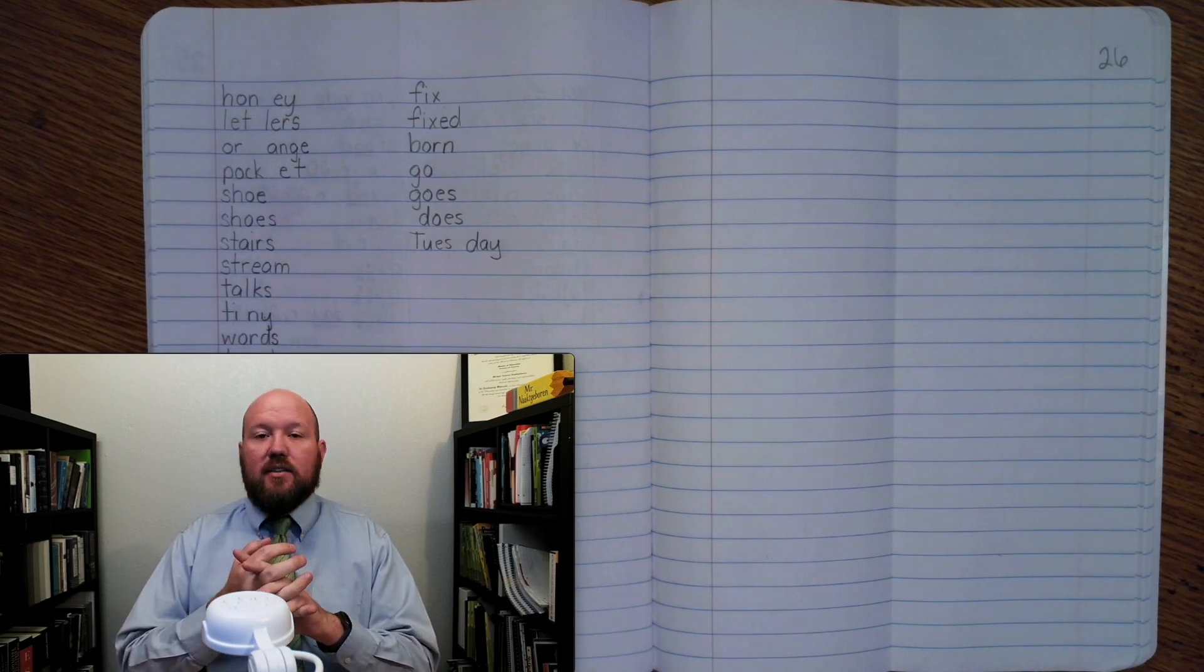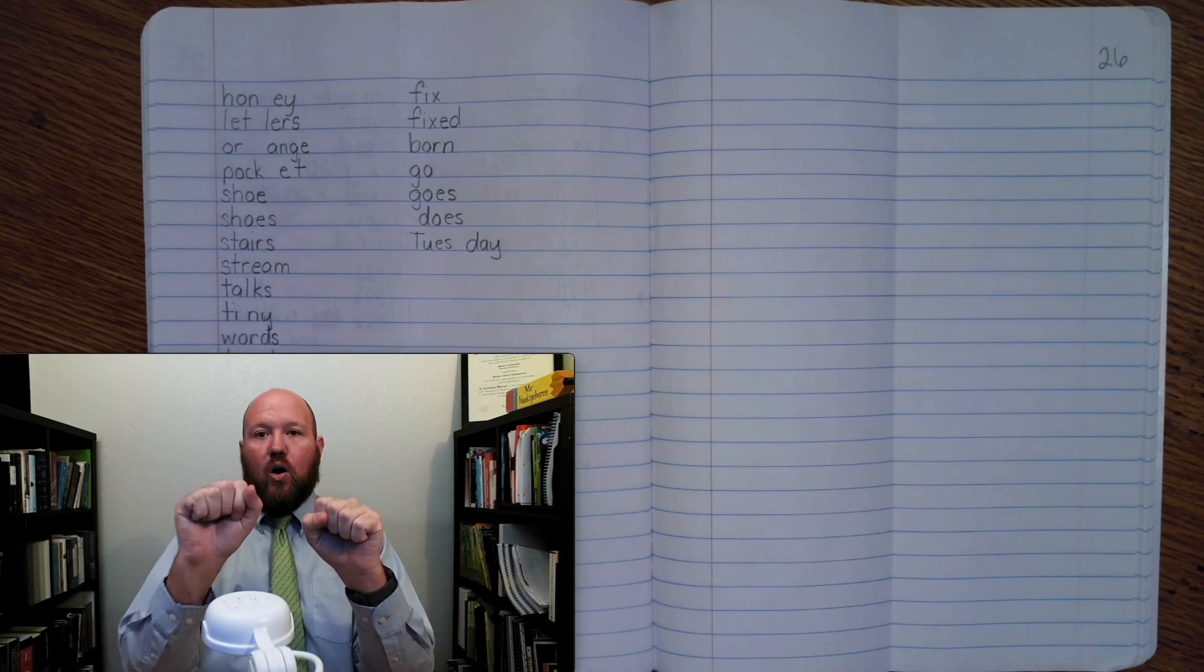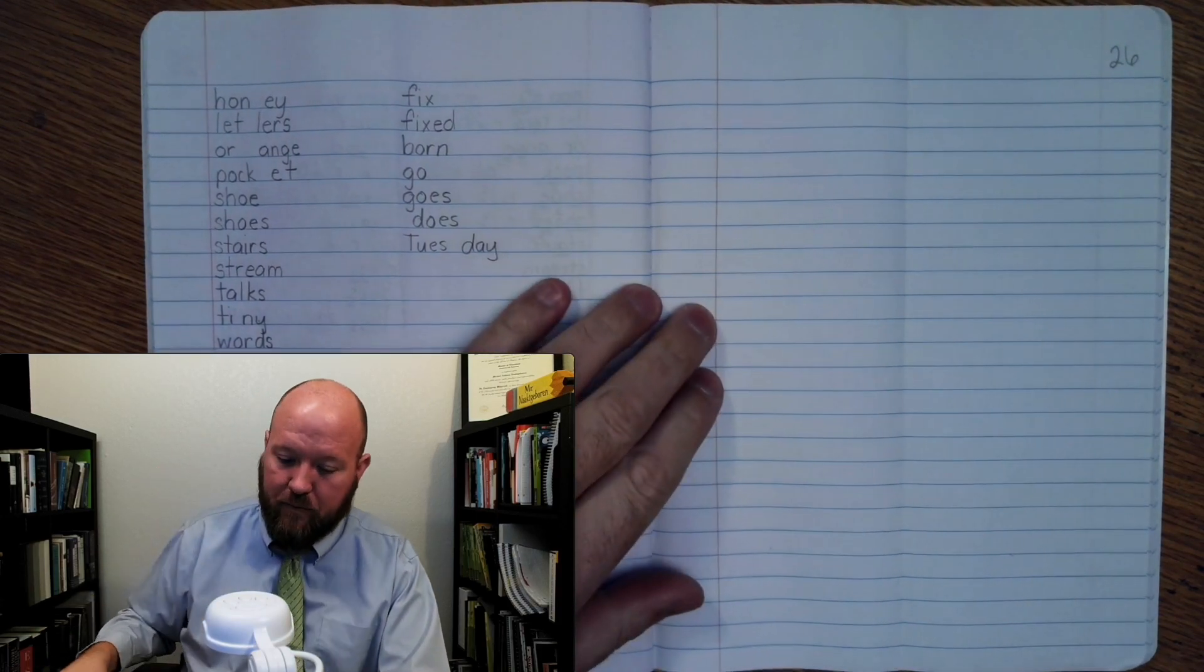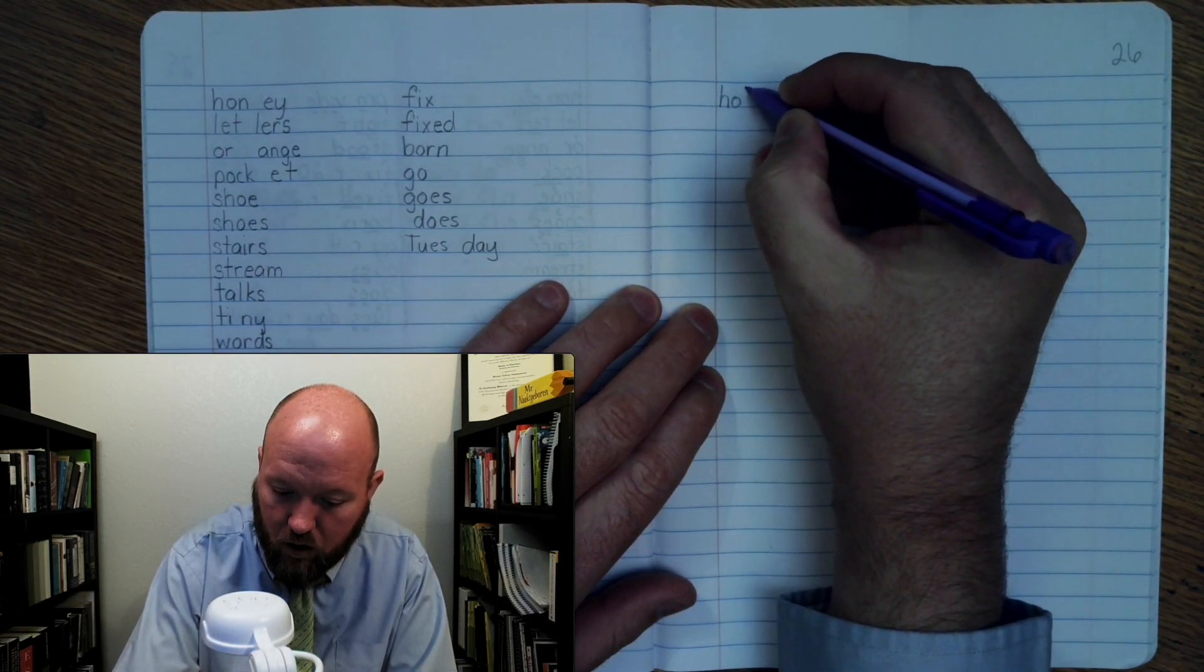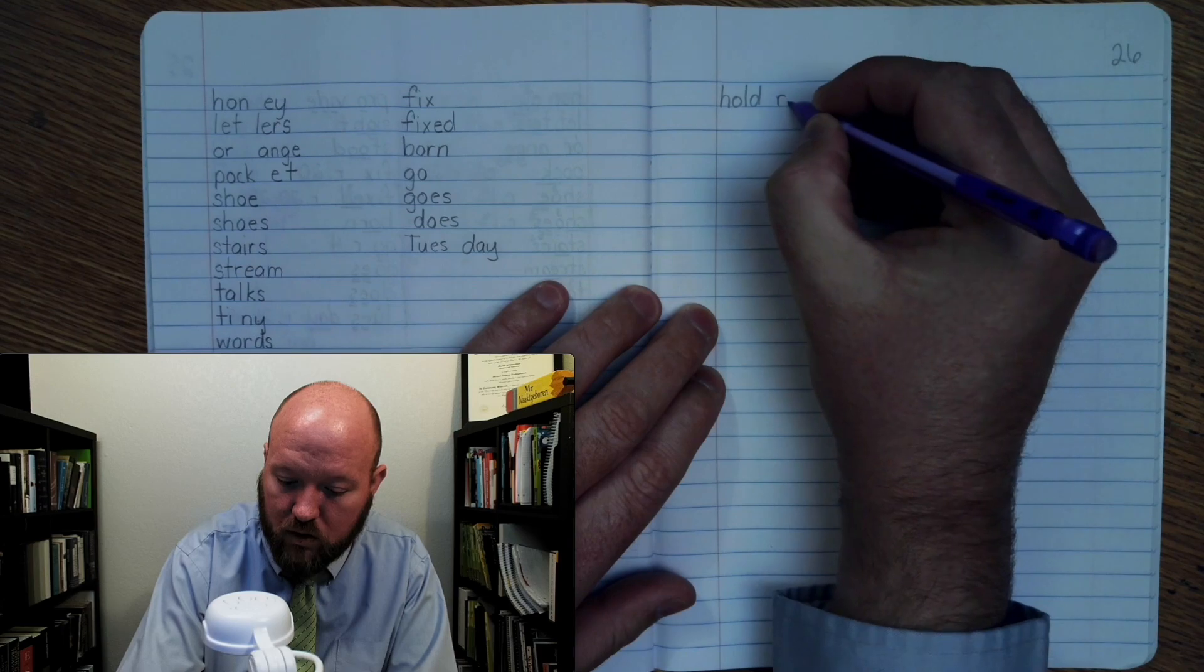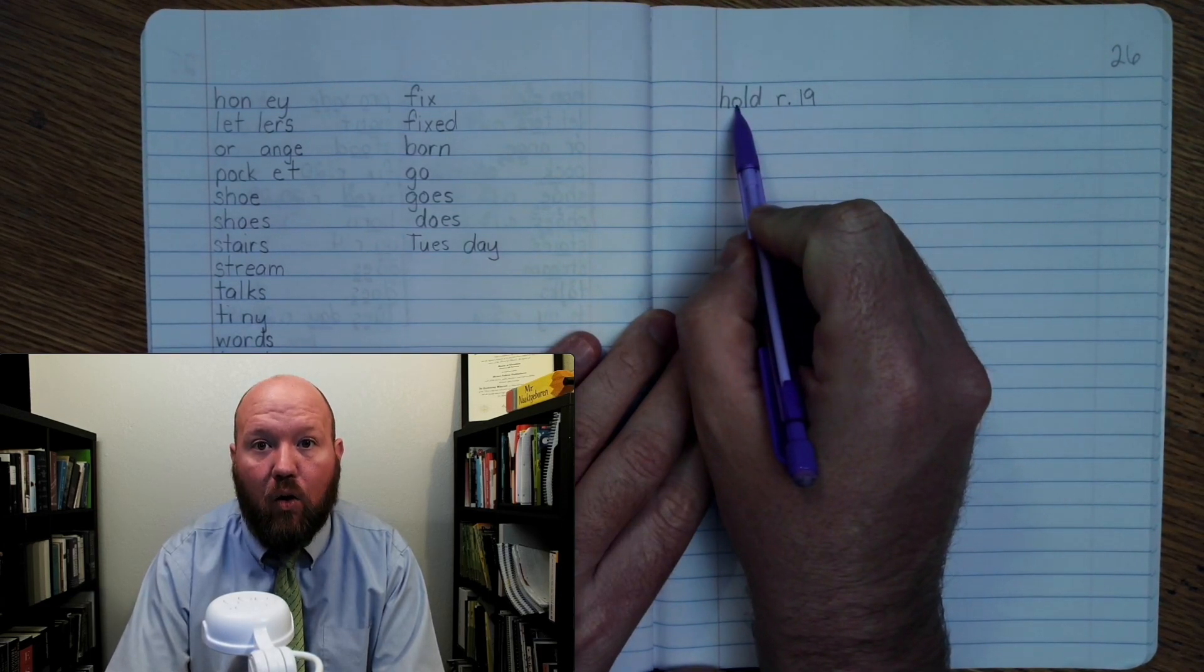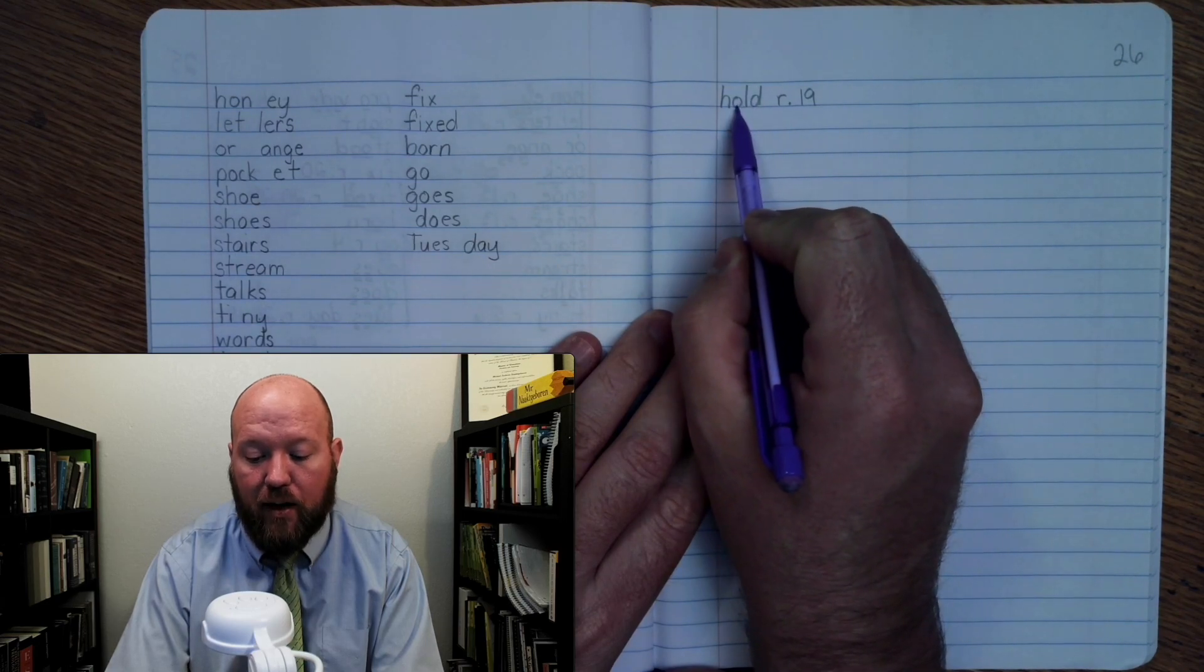The first word for today is hold, like 'please hold my hand.' Base word hold: H-O-L-D. Now write it: H-O-L-D. This uses Rule 19: O may say O when followed by two consonants. It's followed by two consonants in a row and that allows it to say O.